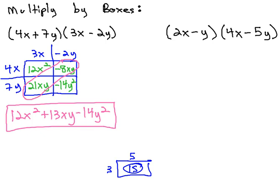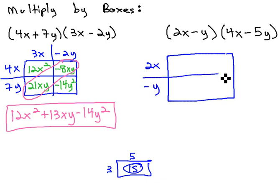Let's take a look at using this box method on another example. In the second example, we have 2x minus y times 4x minus 5y. Drawing a box to represent the problem, we have 2x and a minus y down the side, and 4x and a minus 5y across the top.